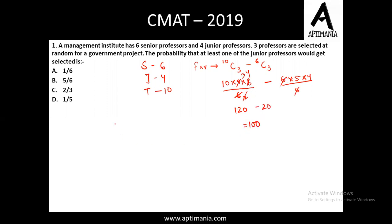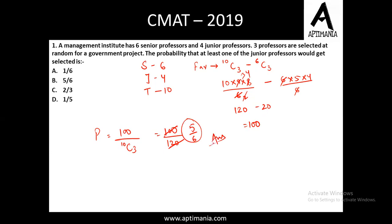Talking in terms of probability, probability equals favorable cases upon total cases, that is 100 upon 120. On cancellation, we get the answer as 5 by 6. The correct answer for question number 1 is option B, that is 5 by 6.